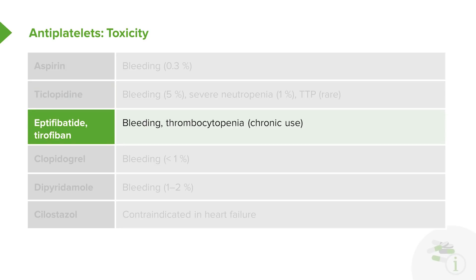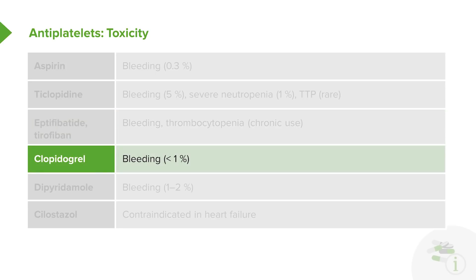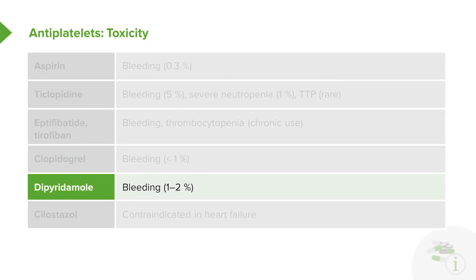For the GP2B3A direct inhibitors, side effects include bleeding and thrombocytopenia with chronic use — but we only use these drugs short-term, so it's less of an issue. For clopidogrel, the bleeding rate is less than 1%, but it is certainly present. When you combine clopidogrel and aspirin together, the bleeding rate increases. Dipyridamole adds between 1% and 2% bleeding risk on top of whatever bleeding risk the primary drug already carries.